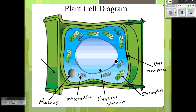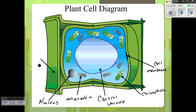There are more structures inside a plant cell, but the main difference between a plant cell and an animal cell is that plant cells have chloroplasts, a large central vacuole, and a cell wall.